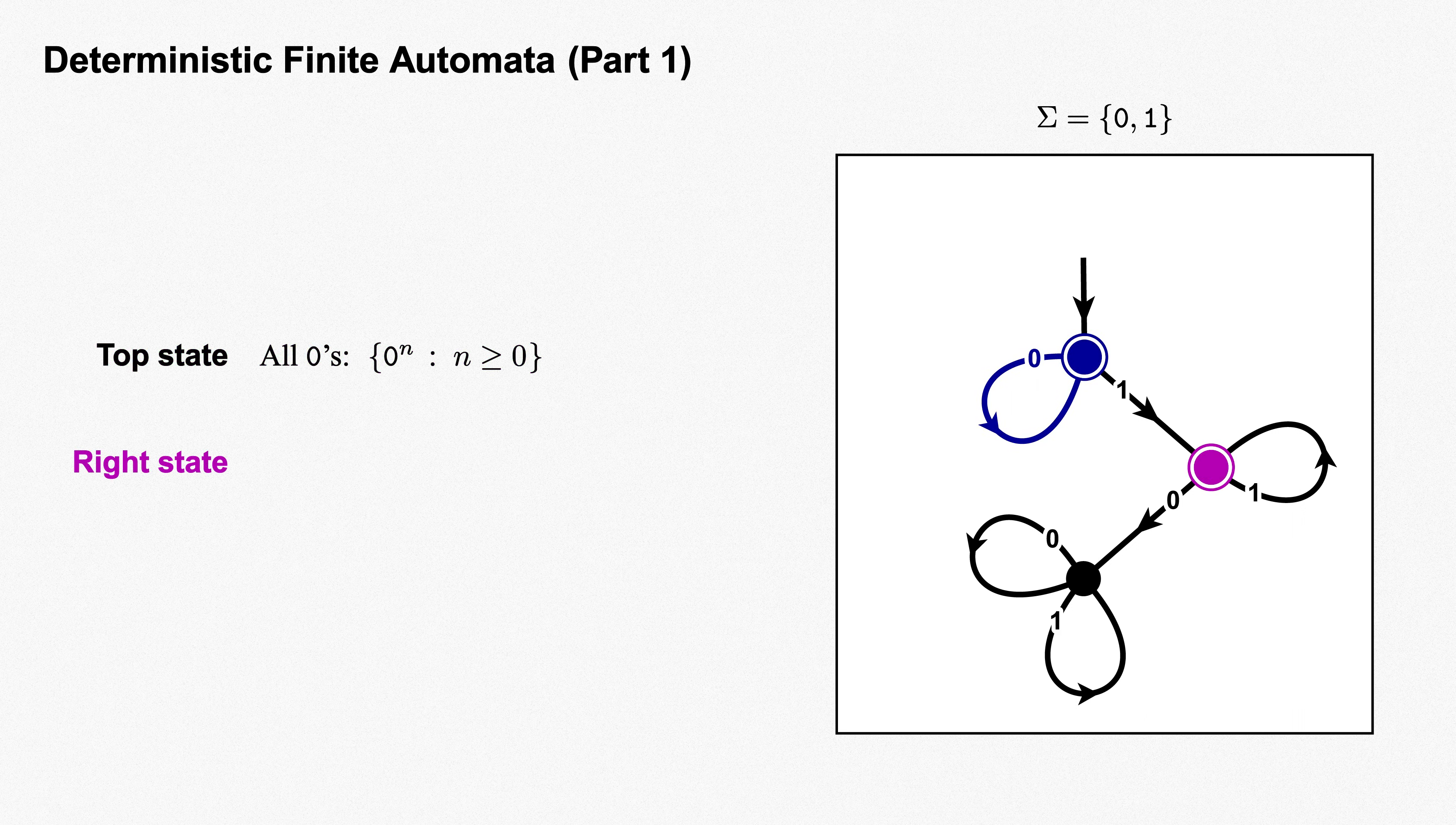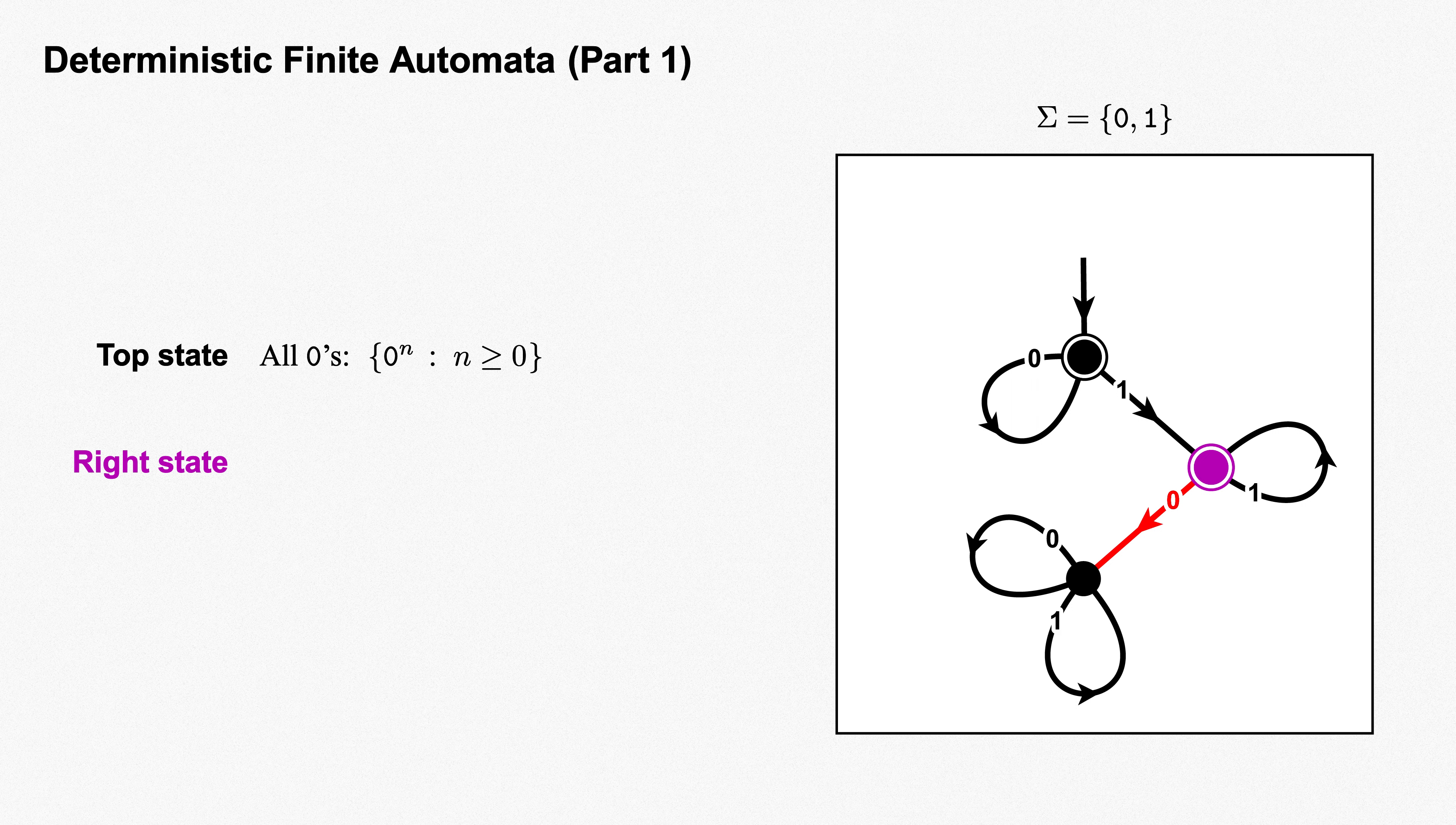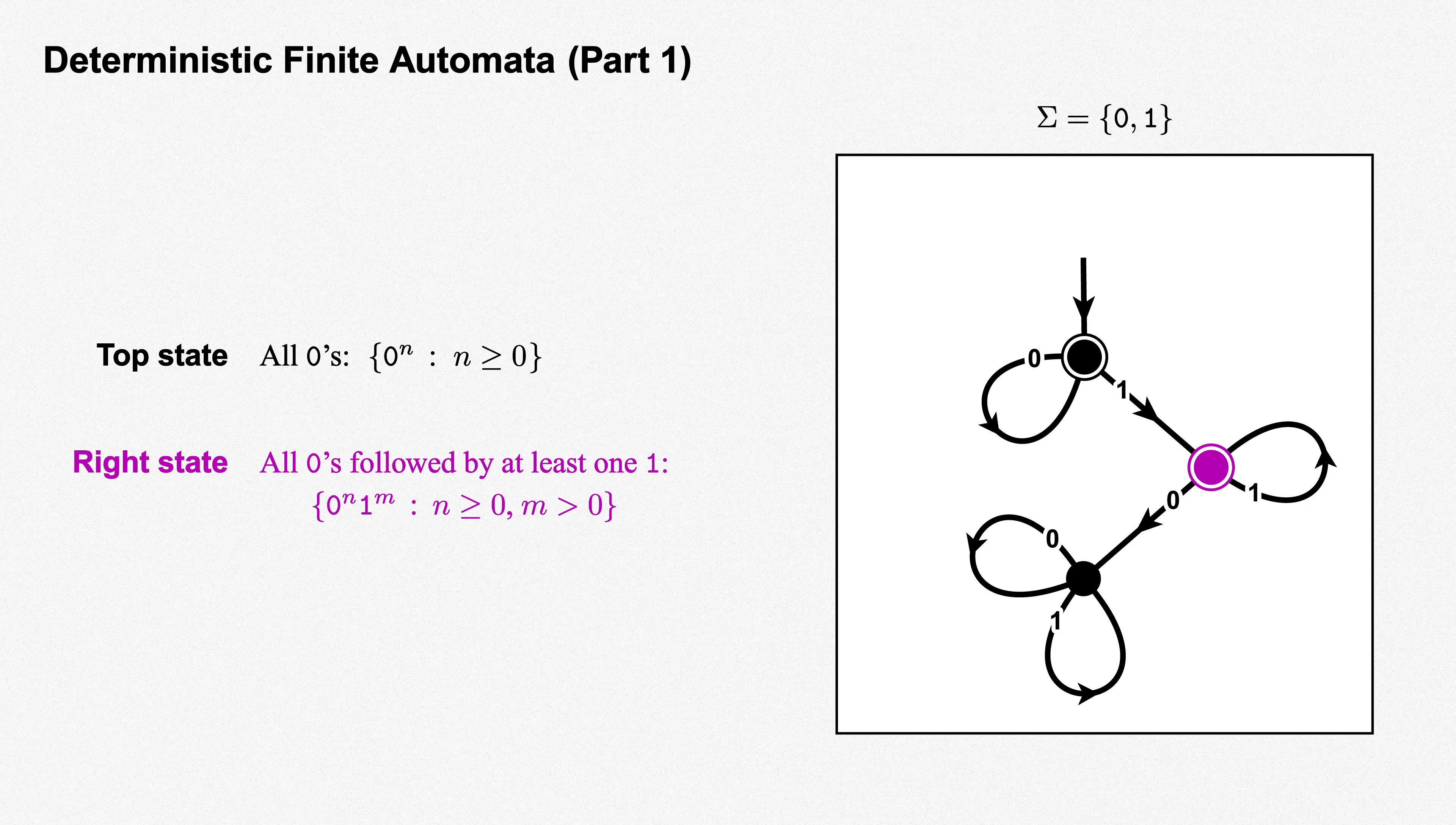How about the state at the right? To land there, we'd see some non-negative number of zeros at the start, then at least one one to get us to this state. Additional ones will keep us at this state, while a zero will move us to the bottom state from which there's no return. The net effect is that the strings landing us on the state at the right are exactly those formed by some non-negative number of zeros, followed by some positive number of ones, but with no zeros after those ones. This gives us a meaning to attach to the state at the right: all zeros followed by at least one one. As a set of strings, the set 0^n 1^m, where n is greater than or equal to 0, and m is greater than 0.